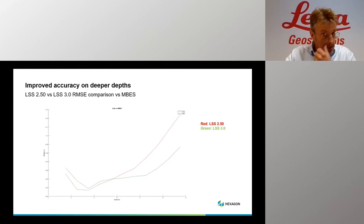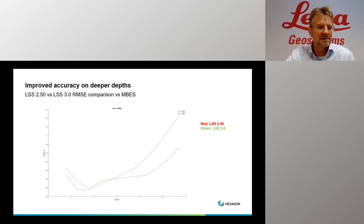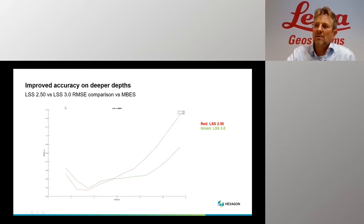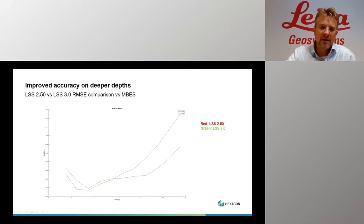On the topic of improved accuracy — this is also an algorithm development. In bathymetric LiDAR there are a lot of different disturbances: water surfaces with different wave models, scattering in the water volume, and so on. Here is a comparison between LiDAR Survey Studio 2.50 and 3.0, compared against a multi-beam data set. The red curve is the previous version and the green curve is the new version. You can see that especially at deeper depths, we have a better accuracy and better RMSE value compared to the previous version.